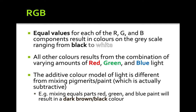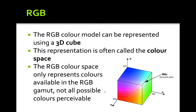The additive color model of light — combining red, green, and blue — is different from mixing physical pigments. Mixing equal parts of red, blue, and green paint results in a dark brown or black color, not gray or white. The digital RGB model works differently from physically combining oil paints or pigments.